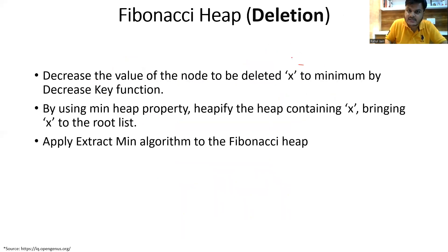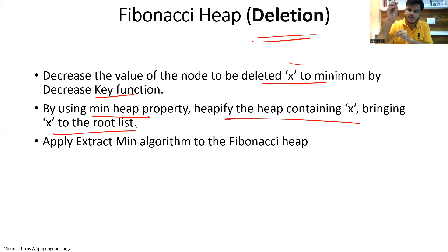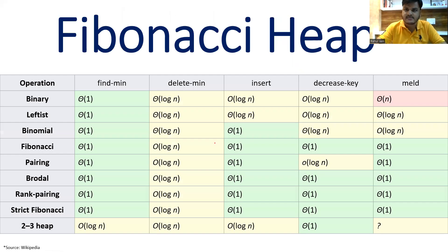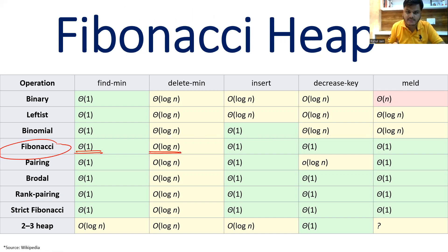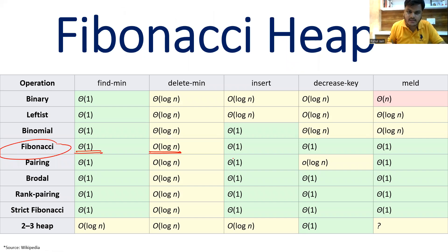The last operation is deletion. Decrease the value of the node to be deleted to the minimum using the decrease key function. Then, using the min-heap property, heapify the heap bringing node x to the root, add it to the root list, and apply the extract-min algorithm to extract it. Finding minimum takes O(1), deletion takes O(log n) because after deletion we must ensure the minimum heap property is maintained, and insertion, decrease key, and union all take Θ(1).